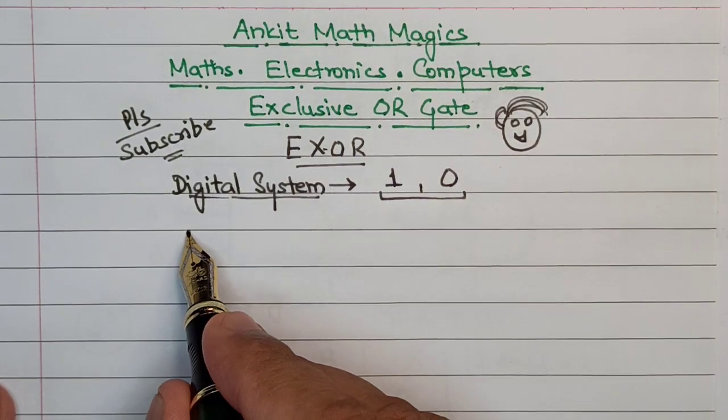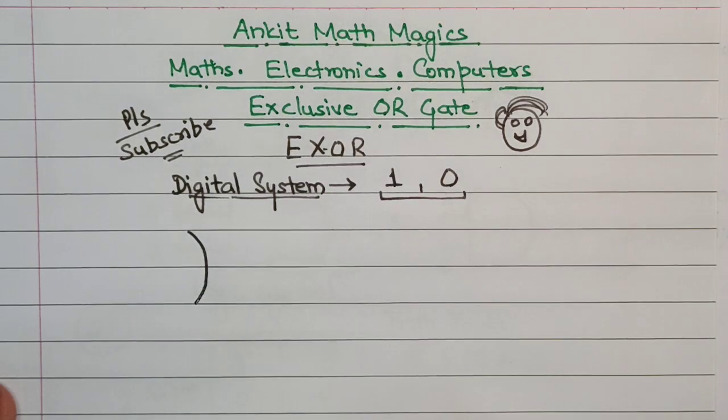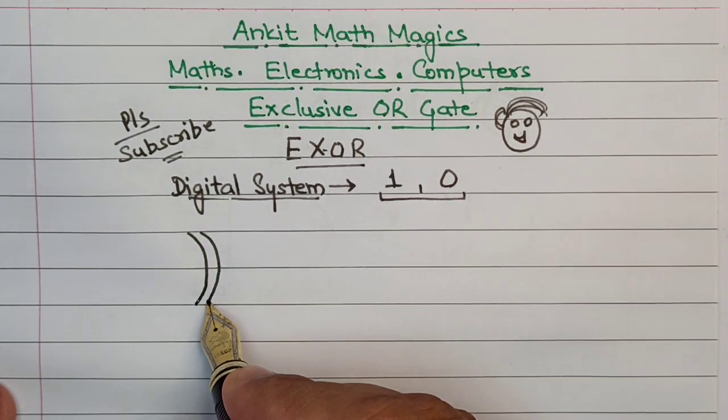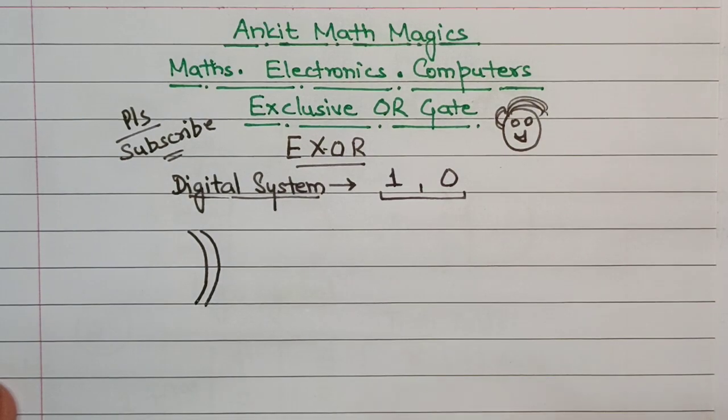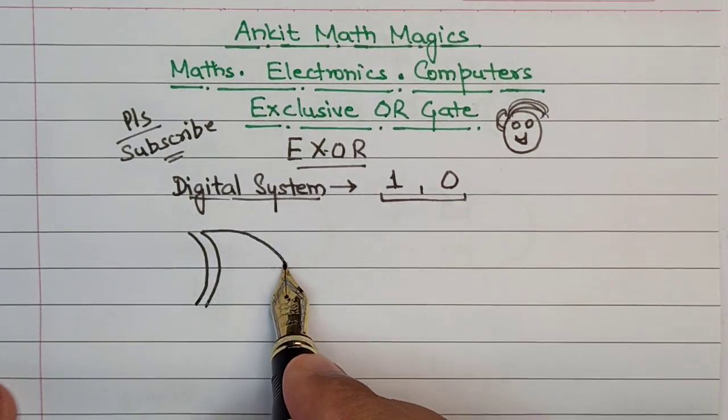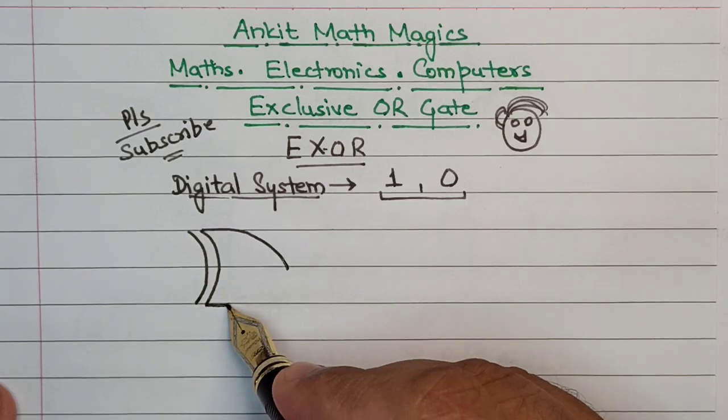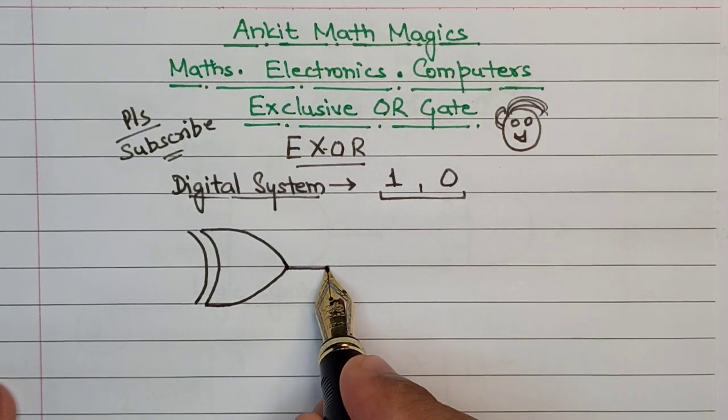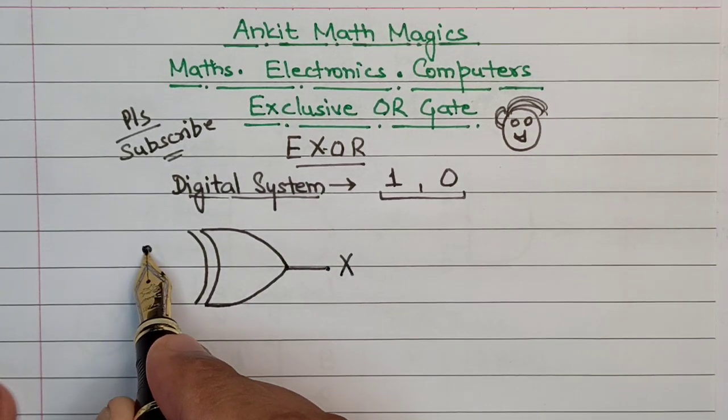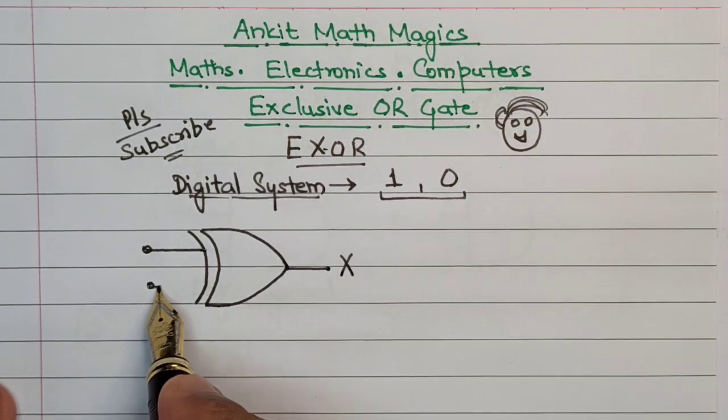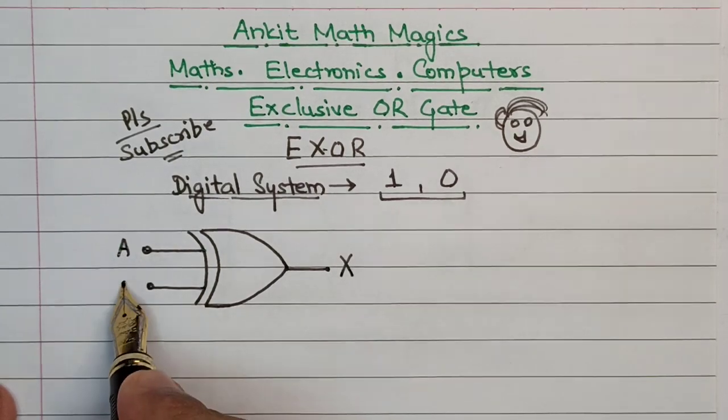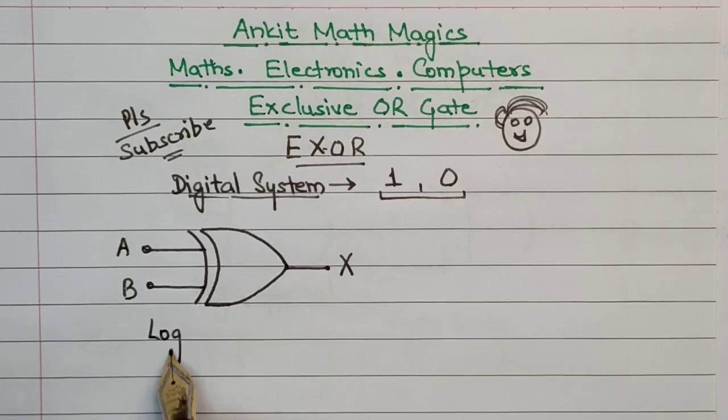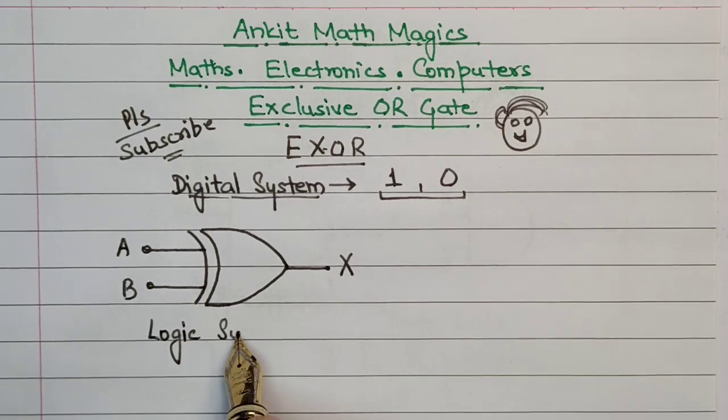The symbol goes like this: first we draw one curve like this, then we draw another curve in kind of a parallel situation like this, and then we continue with an OR gate. From this end we can take our output, which can be taken as X in this example, and there are two inputs: A and B. So this is the logic symbol for the Exclusive OR gate.